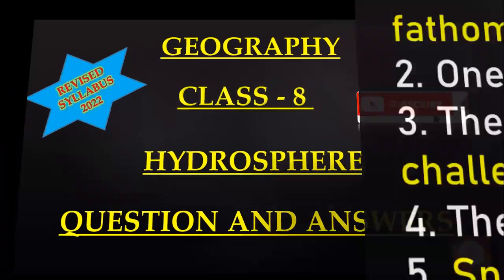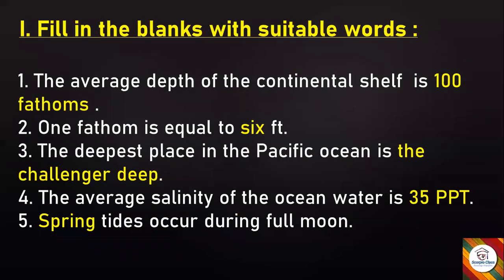Let's get started with the notes. Fill in the blanks with suitable words: The average depth of the continental shelf is 100 fathoms. One fathom is equal to 6 feet. The deepest place in the Pacific Ocean is the Challenger Deep. The average salinity of the ocean water is 35 ppt. Spring tides occur during the full moon.